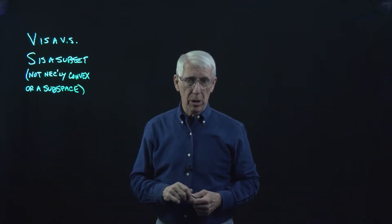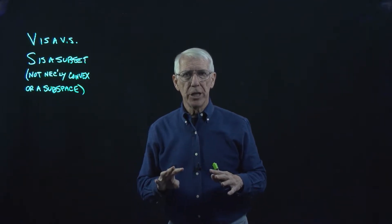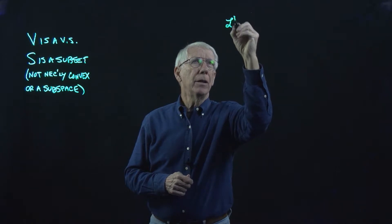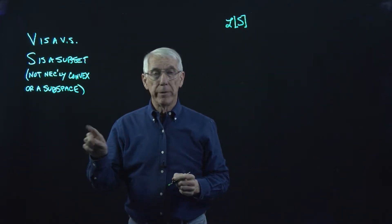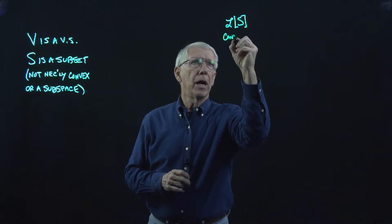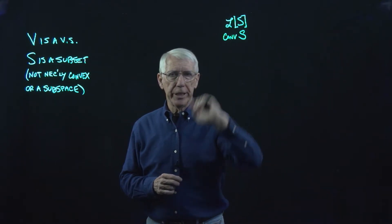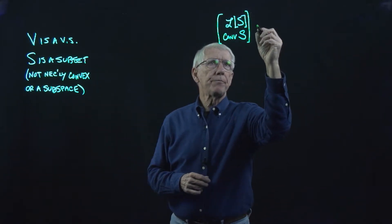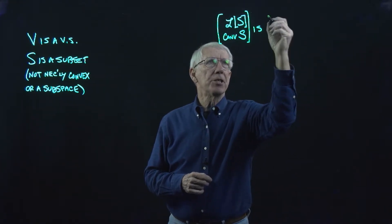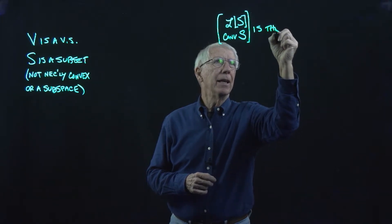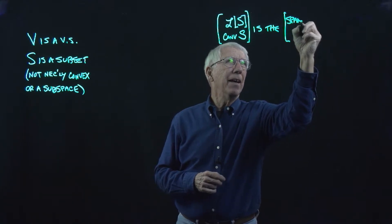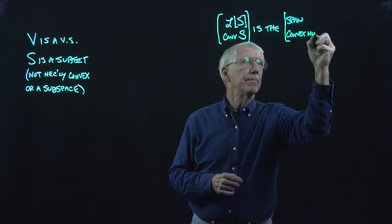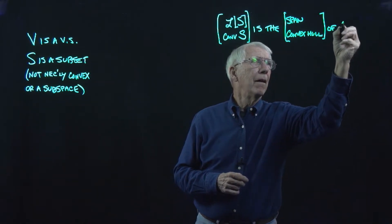When we were talking about linear combinations and the span of a set, we had this notation for the span: L of S. And when we were talking about convex sets, we had the notion of the convex hull of a set S, with the notation CONV. This is the span, and this is the convex hull of S.